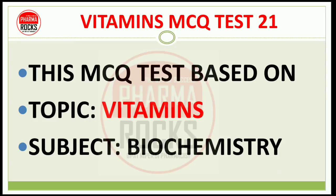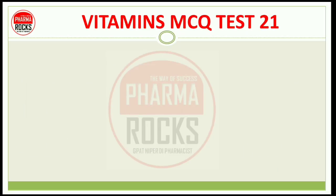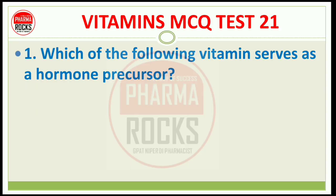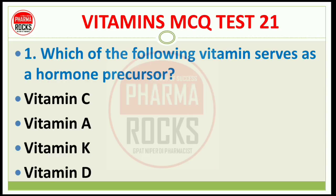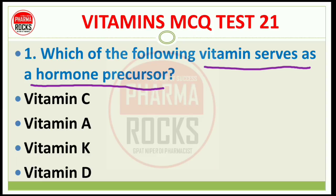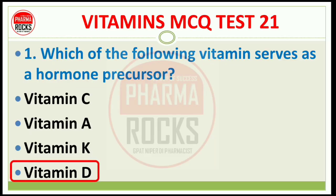Vitamins MCQ test number 21. This test is based on the topic vitamins from the subject biochemistry. Question number 1: Which of the following vitamins serves as a hormone precursor? Options are Vitamin C, A, K, or D. The right answer is option D — Vitamin D.